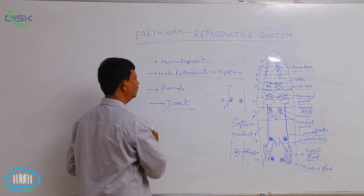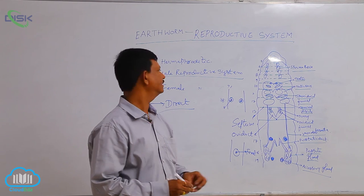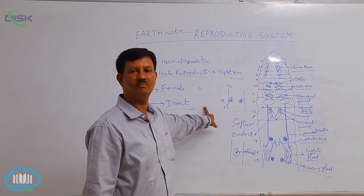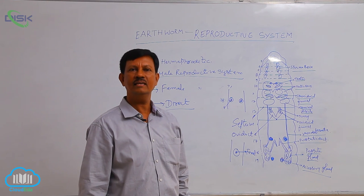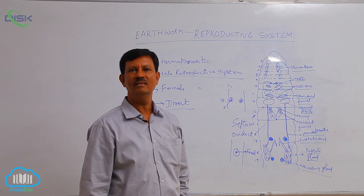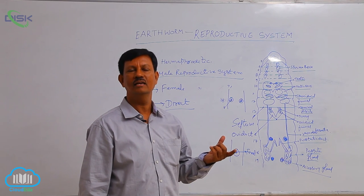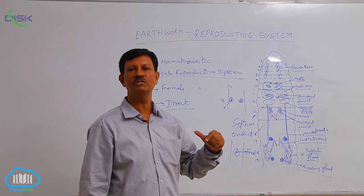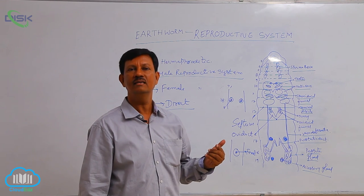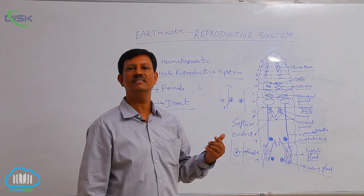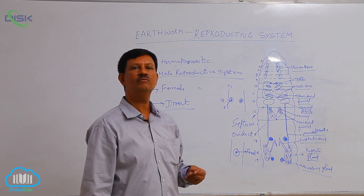Due to the absence of a larval form, it is known as direct development. Regarding the economic importance of the earthworm: earthworms are found in moist soil, feed on rich organic matter, and create pores in the soil. Due to the presence of these pores, oxygen enters the soil and increases soil fertility. Hence earthworms indirectly help farmers and are known as the friend of the farmer.